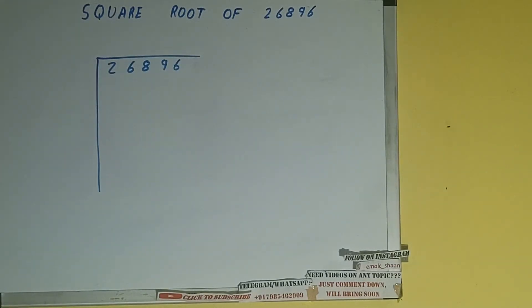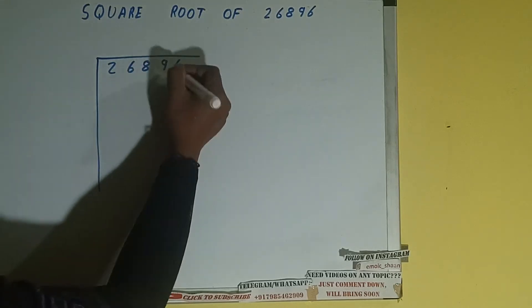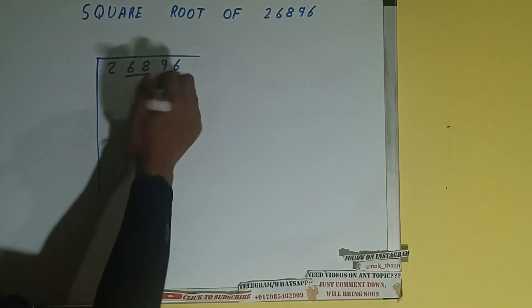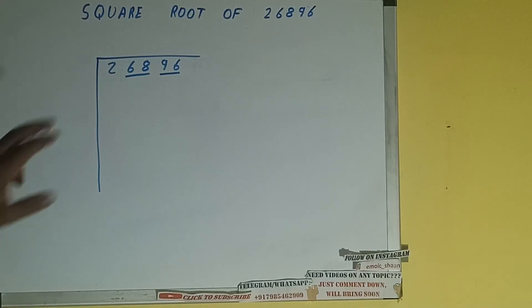Next thing we need to do is form pairs from the right hand side, so one pair will be this, one pair will be this, and these two will be left out. So first we'll divide this two, and then we'll bring down the pairs.